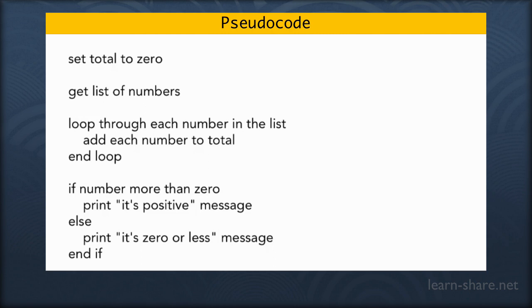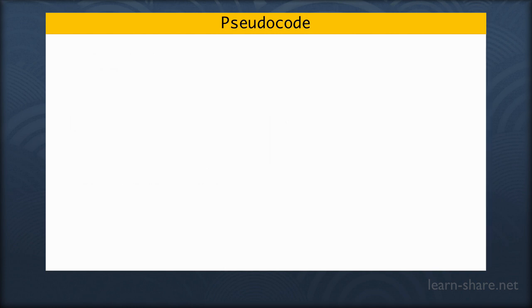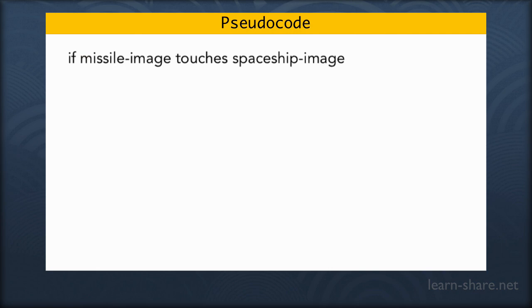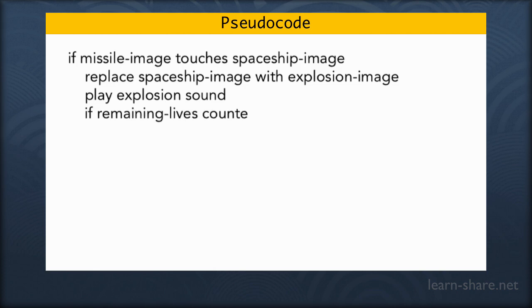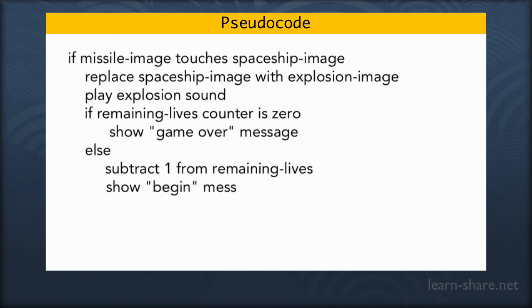One of the best things about pseudocode is it lets you think about your problem without necessarily knowing exactly how to code it. Let's say I'm trying to build a game and I know how to work with images. So I might write pseudocode like: if a missile image touches the spaceship image, replace the spaceship with the explosion image, then play an explosion sound, then check — is the remaining lives counter at zero? If it is, show the game over message. But if it's not zero, subtract one from the remaining lives, show a begin message, reset the spaceship to starting position, etc.